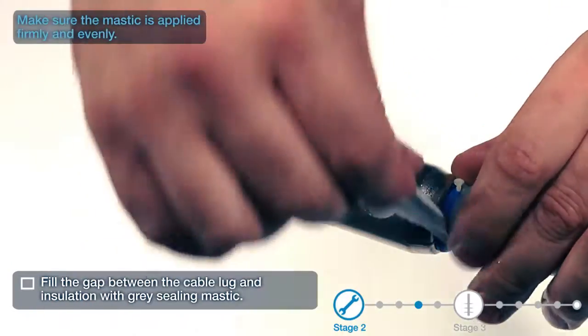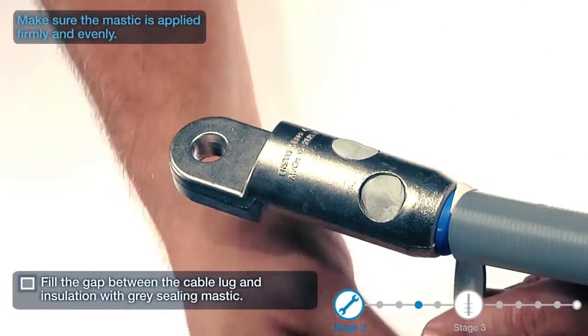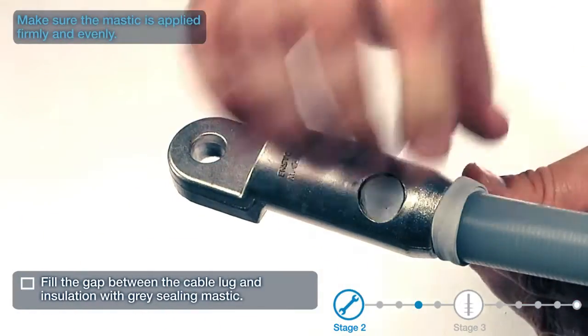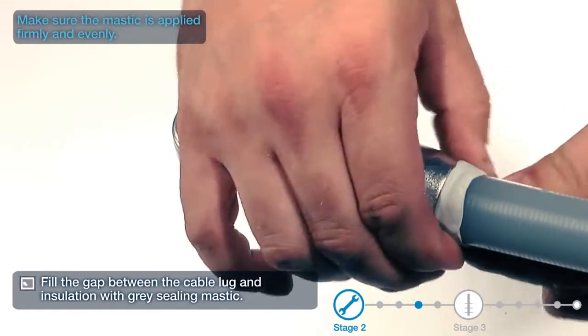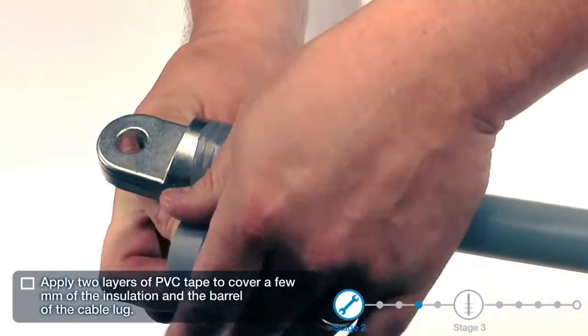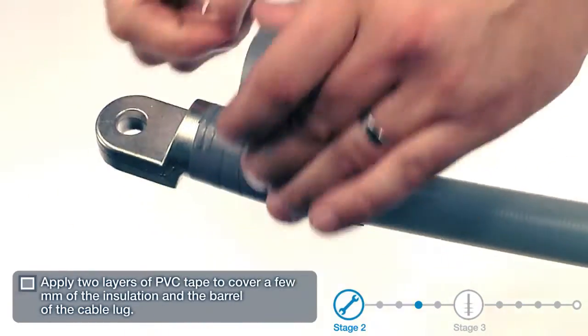Fill the gap between the cable lug and insulation with grey sealing mastic. Apply two layers of PVC tape to cover a few millimeters of the insulation and the barrel of the cable lug.